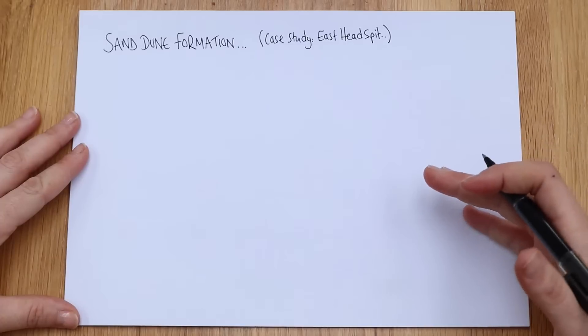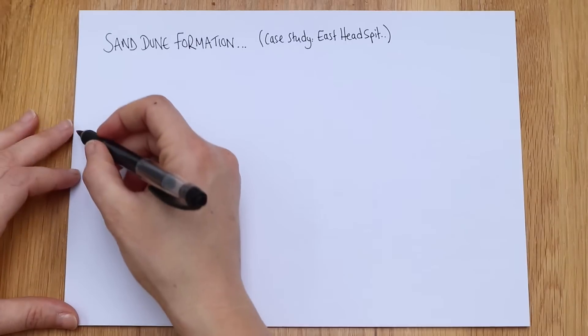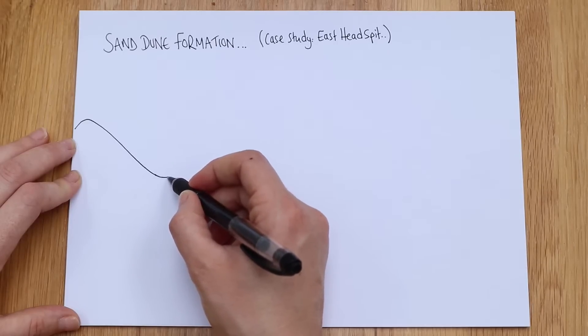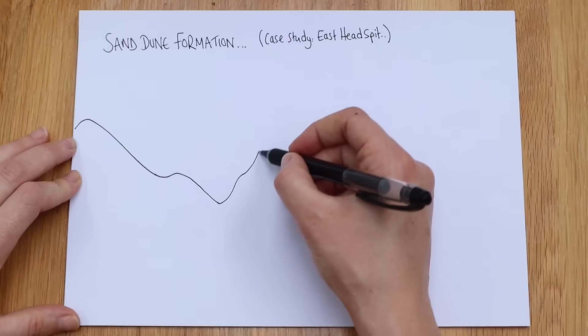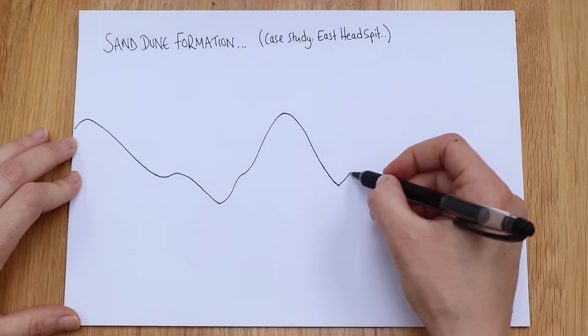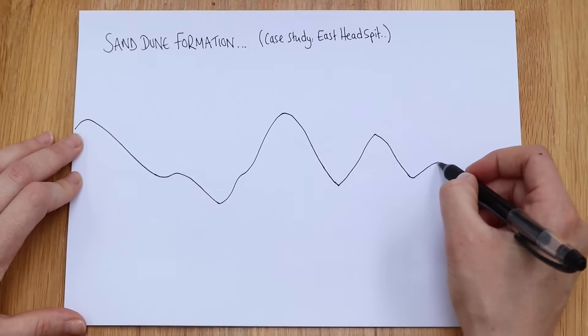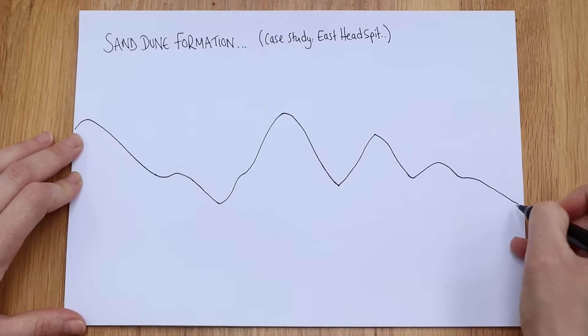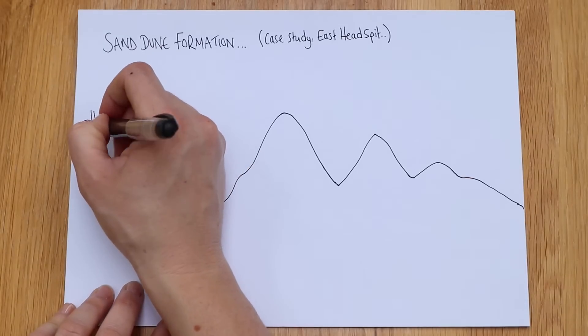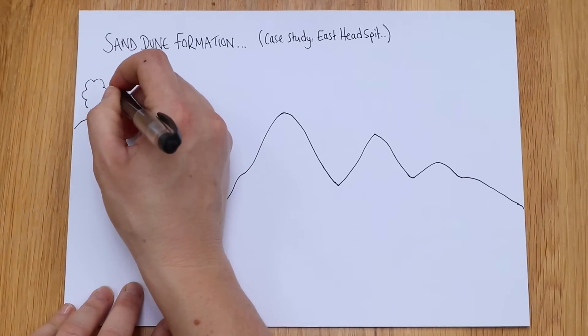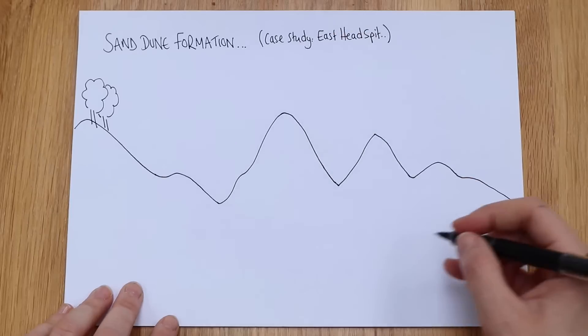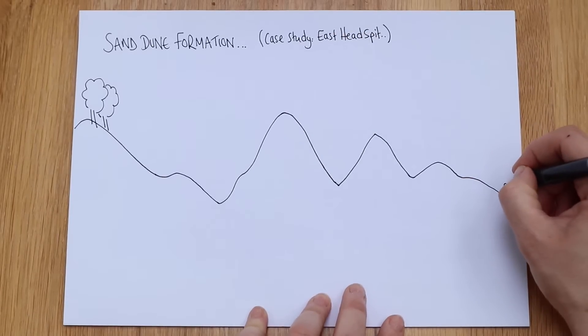Now to teach you about this I'm just going to do a really simple sketch, and if you just copy it that would be great. So I'm going to just start with our sort of hillside here, and then we need our old dune, and then a fore dune, and then like an embryo dune, and then the beach.